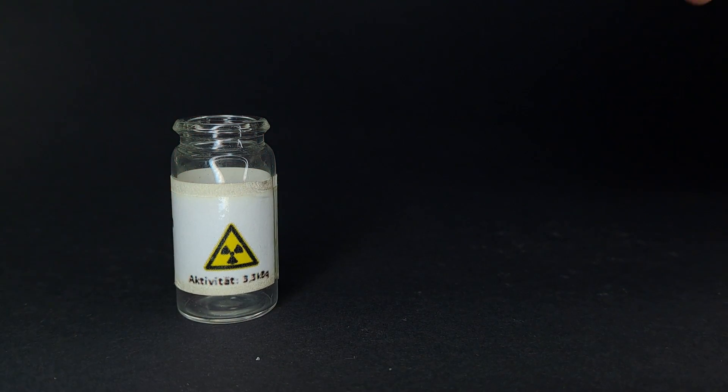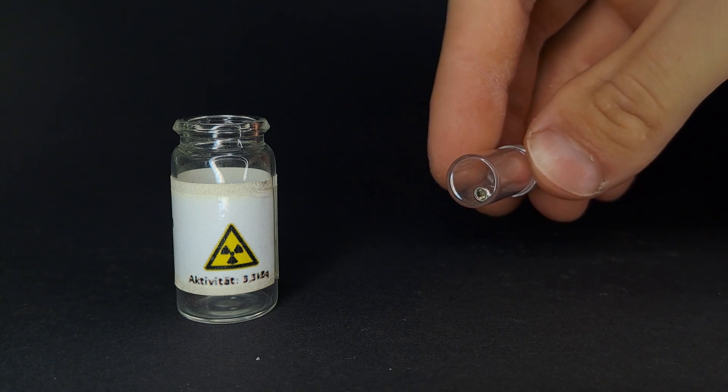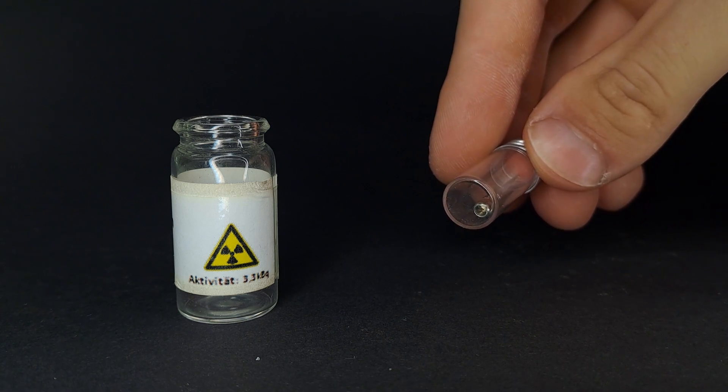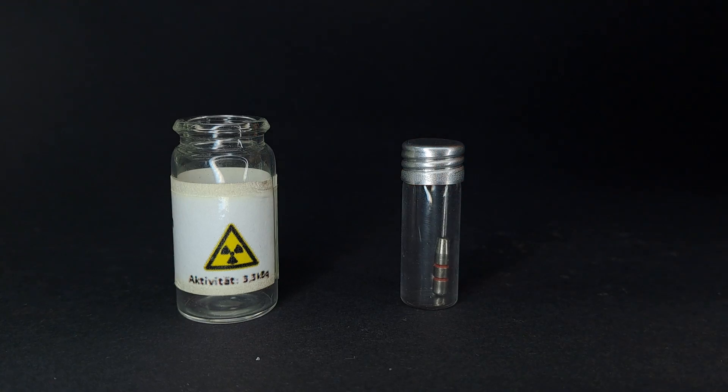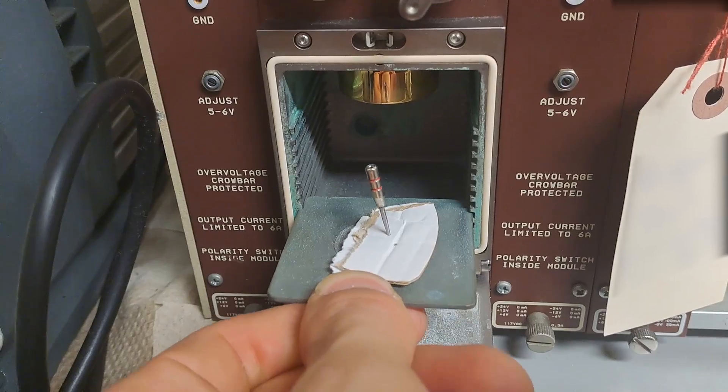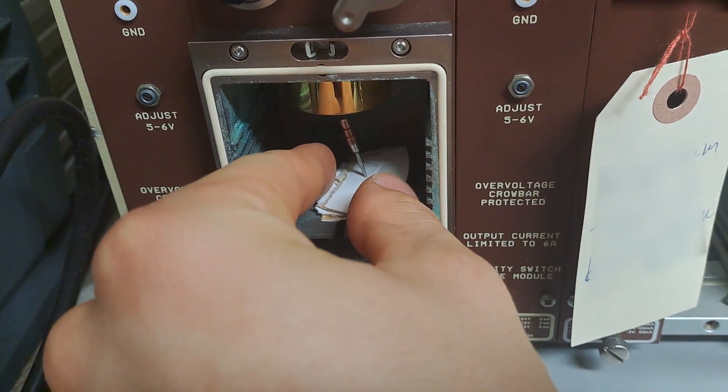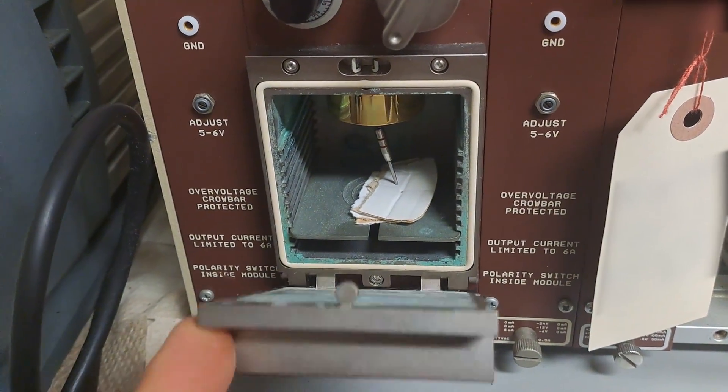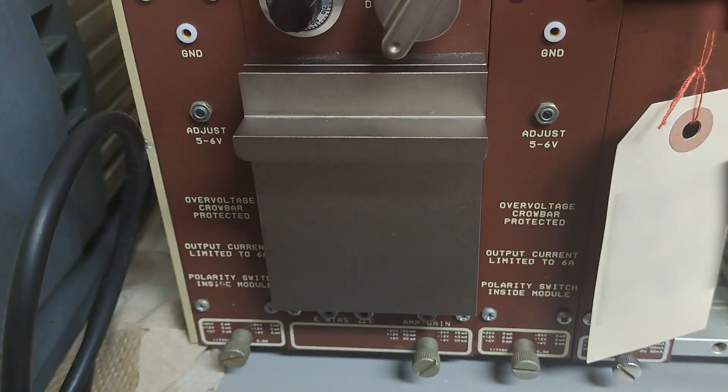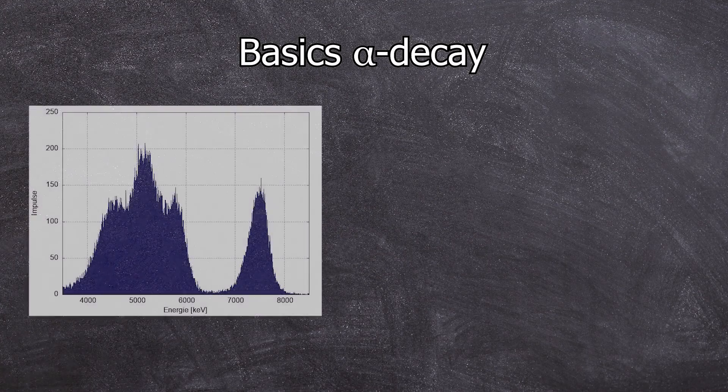This sample we call the radium cannon because it's specially shielded so that the alpha particles can only be emitted in just one direction. The radium cannon is carefully placed in an alpha detector. It's most important to note that the alpha measurements are conducted under vacuum, and I'll explain why shortly. After half an hour, we get a spectrum that looks like this.